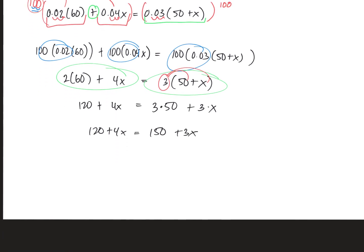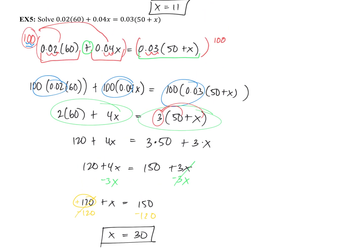Subtract 3x from both sides — I like to keep x positive — to get 120 plus x equals 150. Then subtract 120 from both sides, since 120 is positive and we do the opposite to remove it: x equals 150 minus 120, which is 30. So x equals 30. You could check this answer to confirm it's correct.